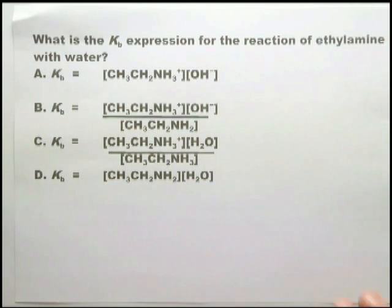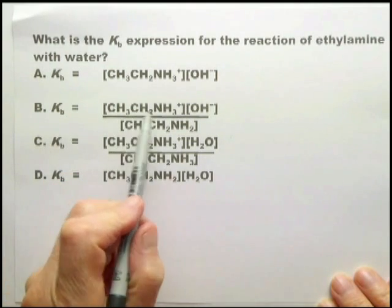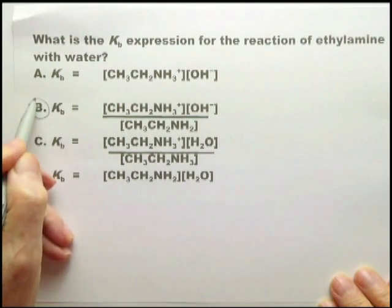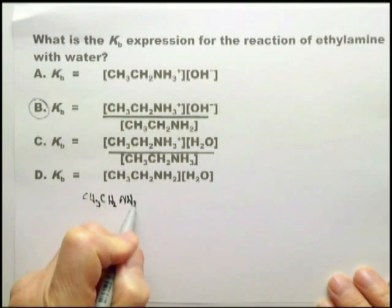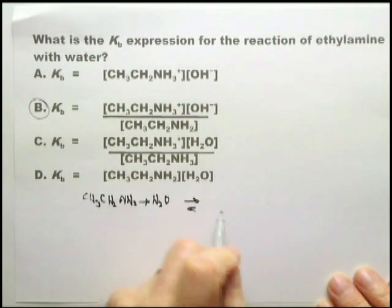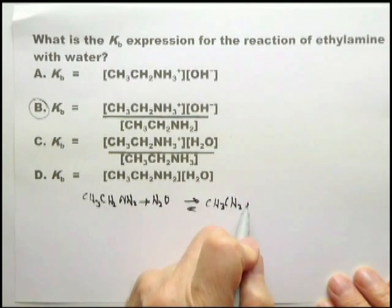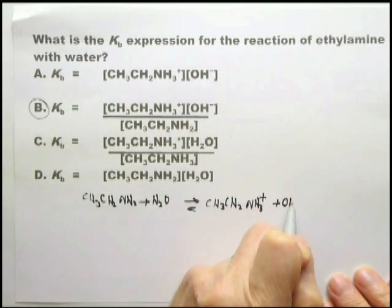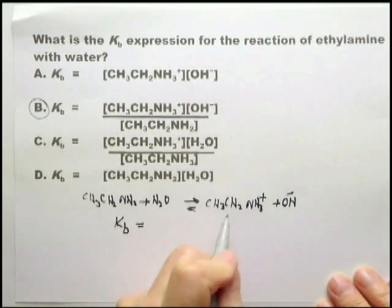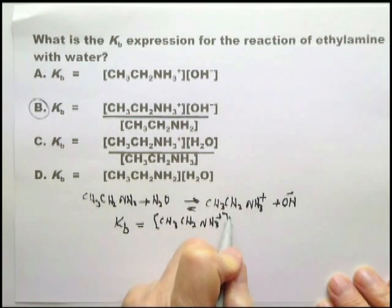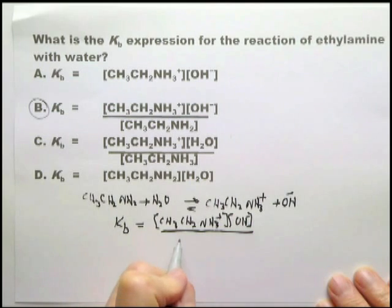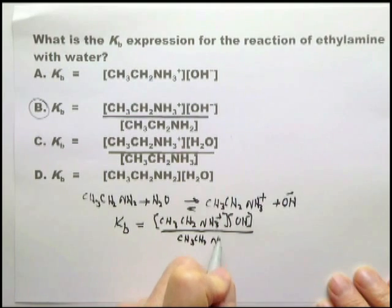Having done the ammonia one, this becomes easy. We're simply looking for the amine, ethylamine, on the bottom of the equation. And looking at this, we see it's there. And above it is the NH3 plus and OH minus. This must be it. Just to confirm that, it's CH3CH2NH2 plus H2O goes to CH3CH2NH3 plus OH minus. And therefore the Kb equals that one CH3CH2NH3 plus OH minus over the amine CH3CH2NH2.